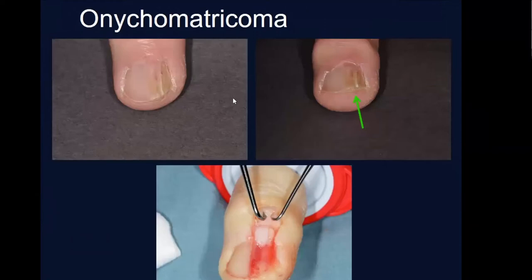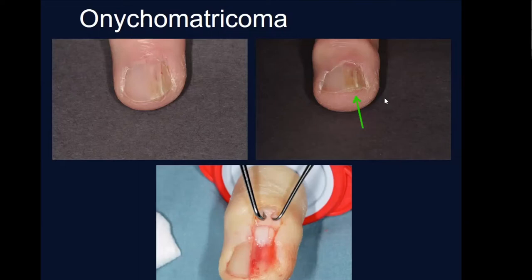Onychomatricoma is a neat tumor — it's a tumor of the nail matrix. Often what we see are areas of yellow longitudinal banding. If you look at the free edge of the nail plate, it's thickened. Sometimes we send a clipping from the free edge of the nail plate, because what you see is this kind of mesh-like network that sends interdigitating fronds of tissue into the nail plate, so the nail plate is thickened and has this kind of honeycomb tissue.